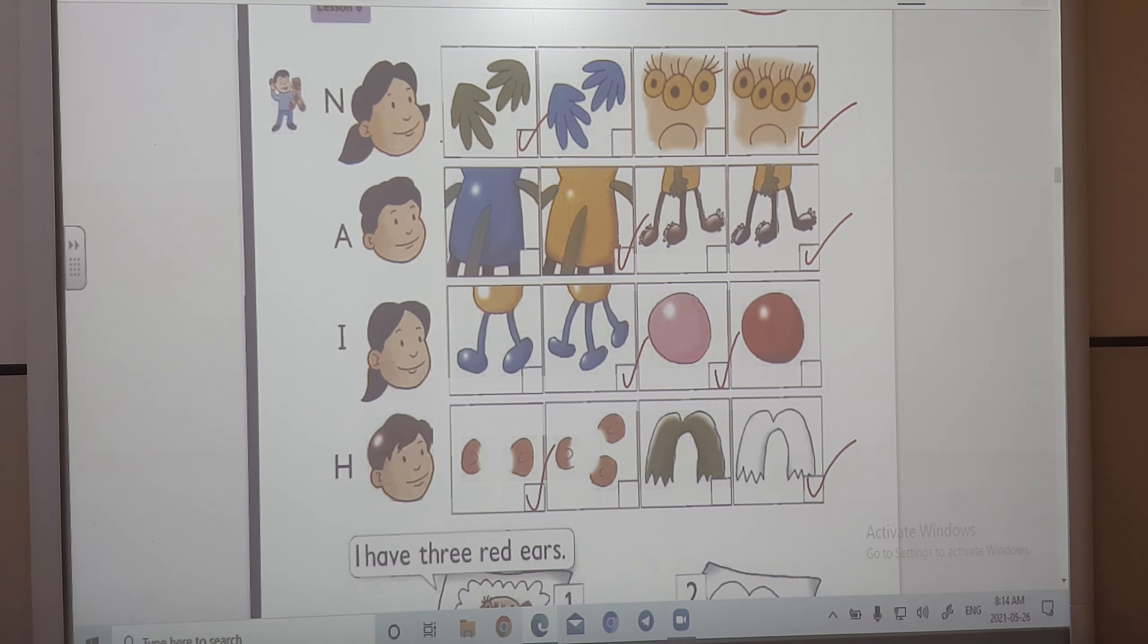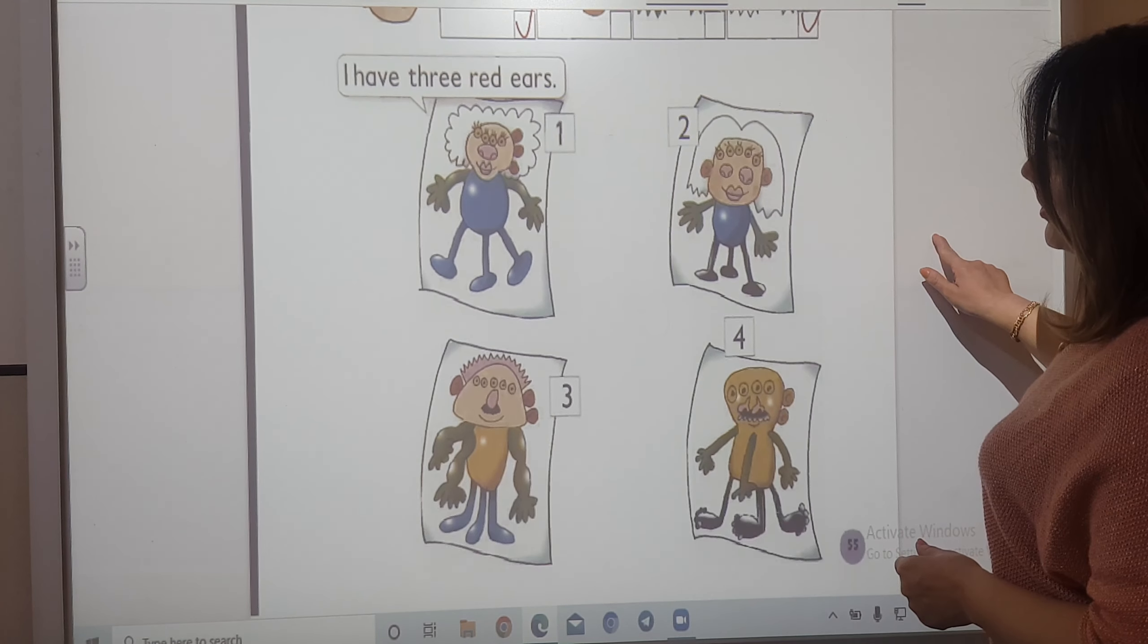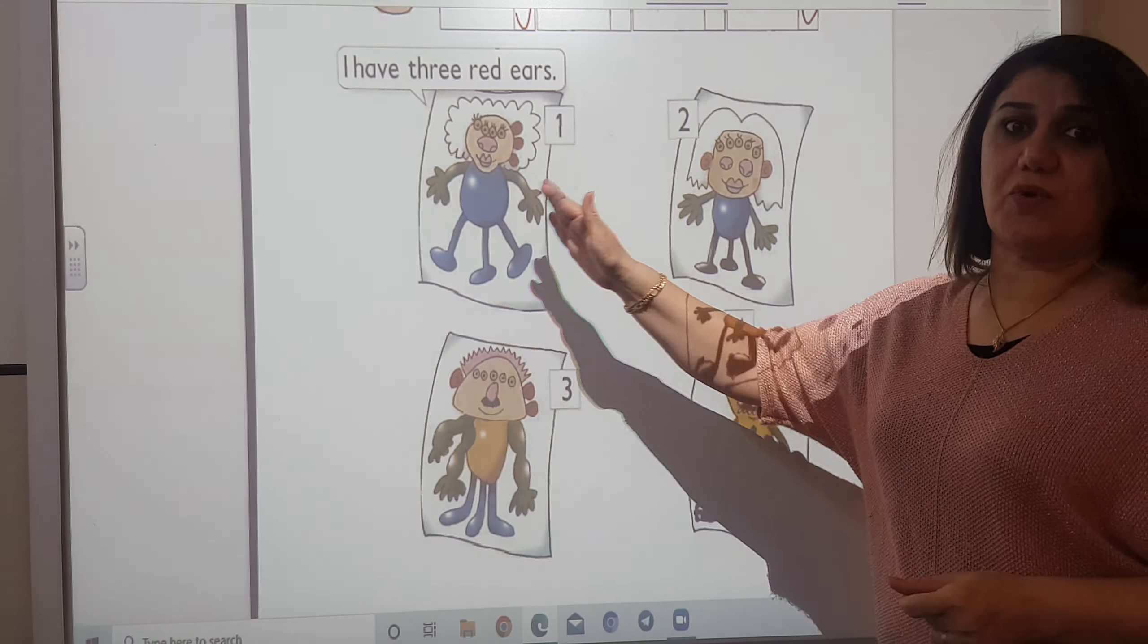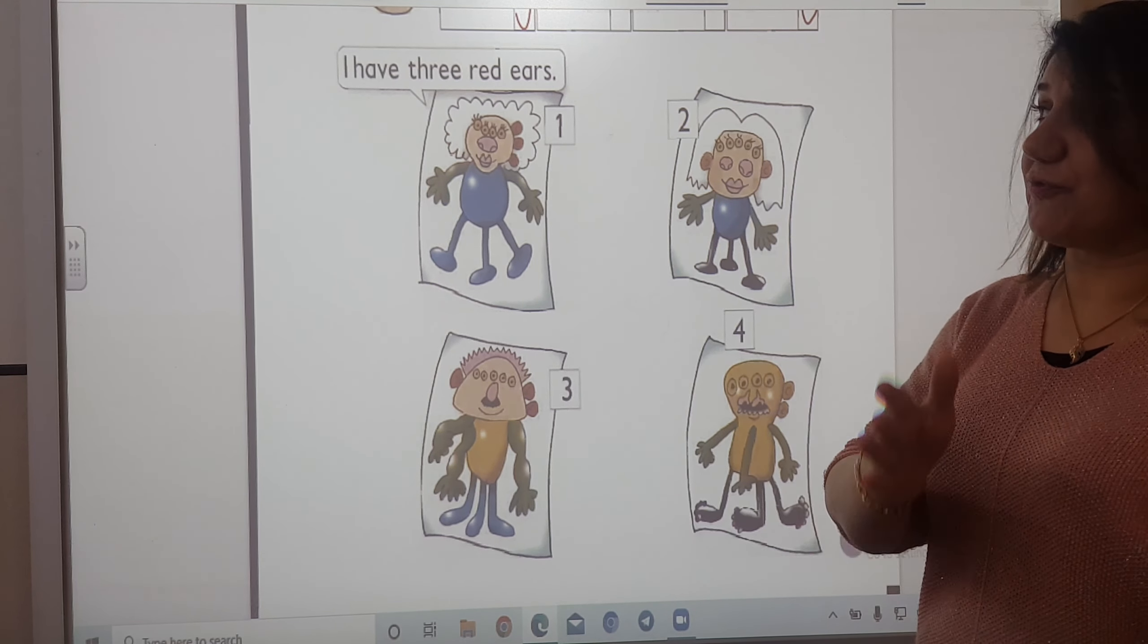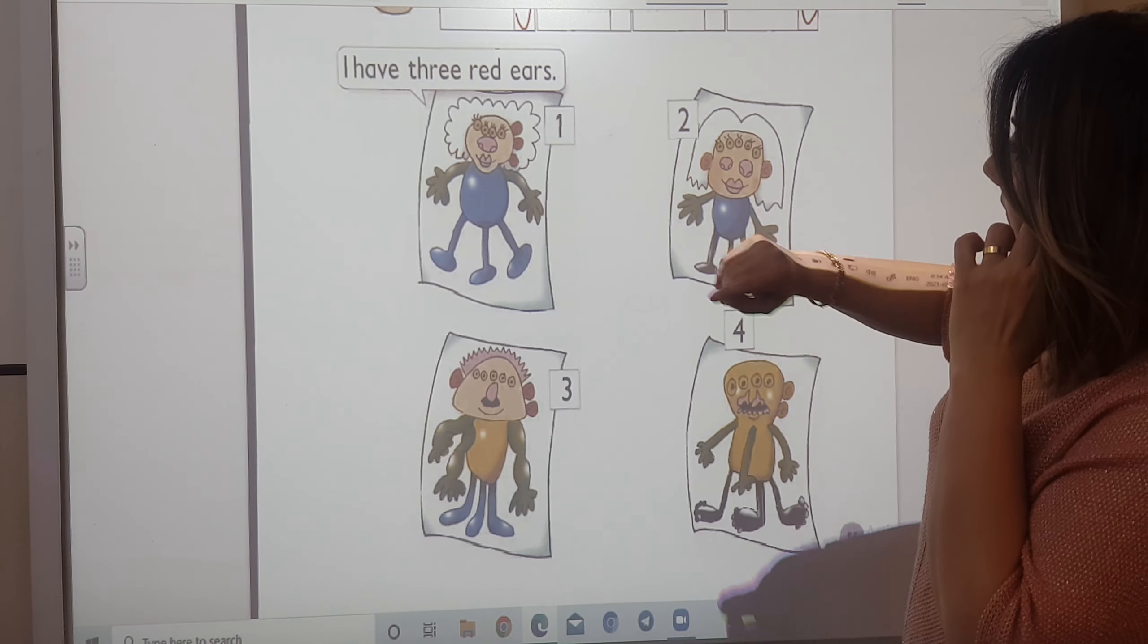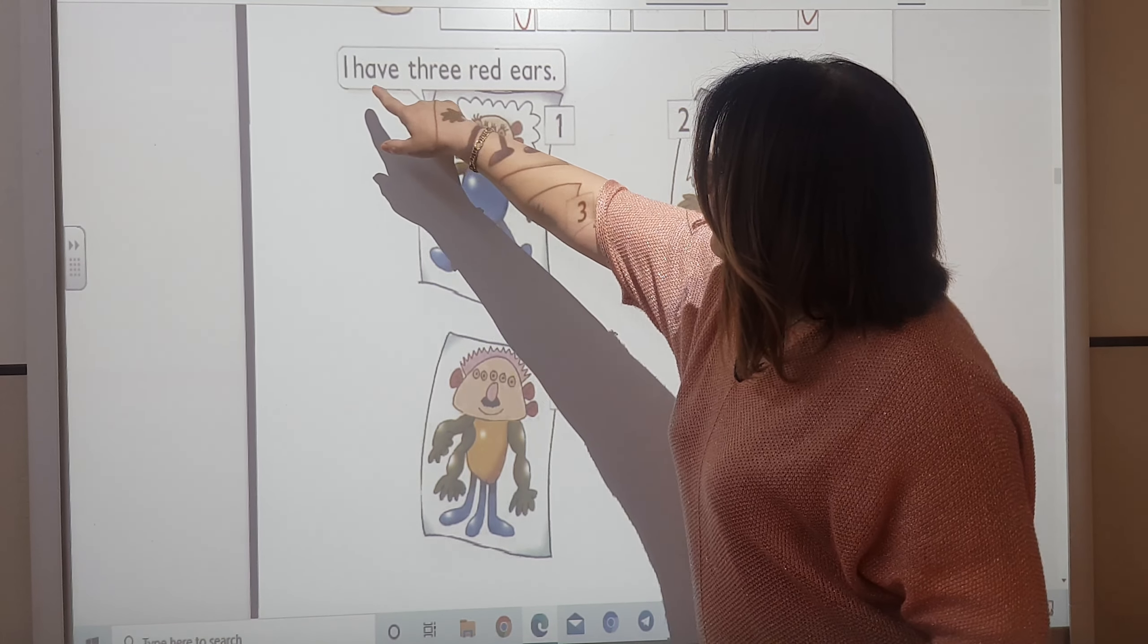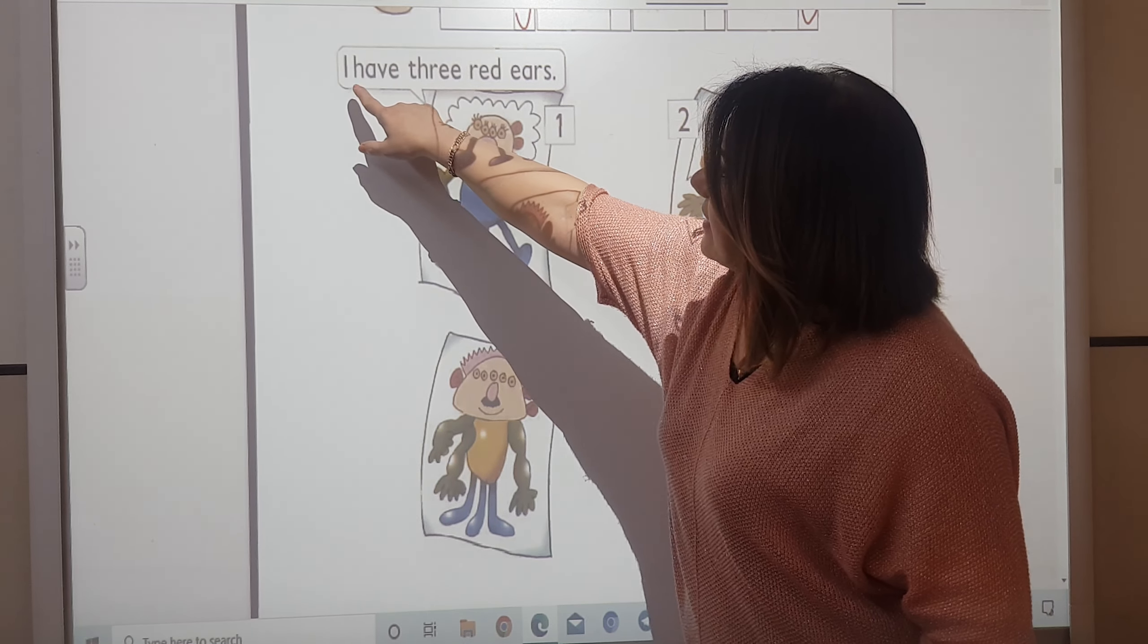Okay? So, these are their monsters. Now, here we have these monsters. But we don't know which monster is for Neda, which monster is for Ahmed or for Hany or for Iman. But before we listen to these monsters, before we listen to the description, I mean, let's read this sentence.